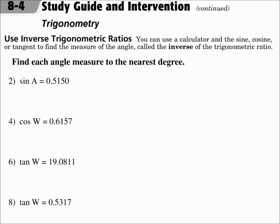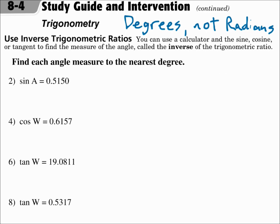You can use a calculator and the sine, cosine, or tangent to find the measure of an angle — this is called the inverse of the trigonometric ratio. When you use a calculator, make sure that your calculator is in degrees, not radians. On a TI-83 calculator, push the mode button and make sure that degrees is highlighted instead of radians. If radians is highlighted, go down and switch to degrees; otherwise your answers won't be right.